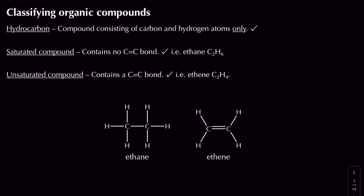The first term we're going to look at is hydrocarbons. Hydrocarbons are compounds that consist of carbon and hydrogen atoms only — and the key word in the exam is 'only'. So something like methane, which has a formula of CH4, is a hydrocarbon. But ethanol, which has a formula of C2H5OH, is not a hydrocarbon because it contains an oxygen atom — it does not consist of carbon and hydrogen atoms only.